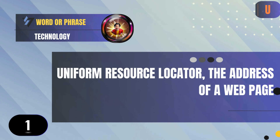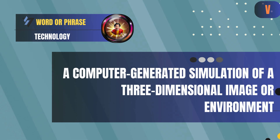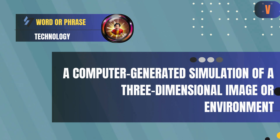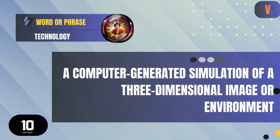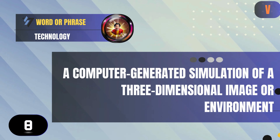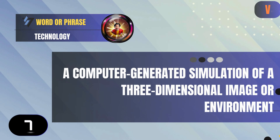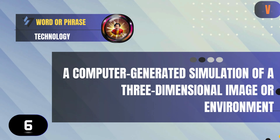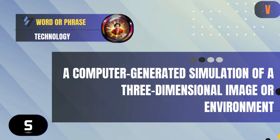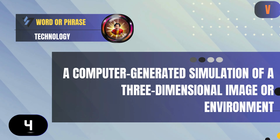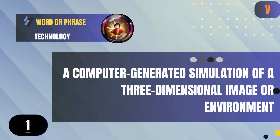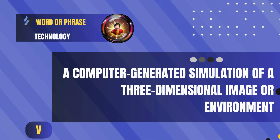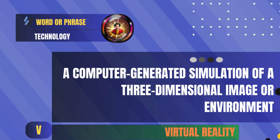V: A computer-generated simulation of a three-dimensional image or environment. Answer: Virtual Reality.